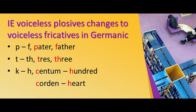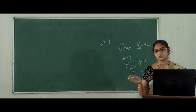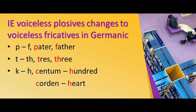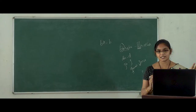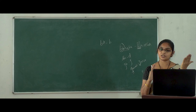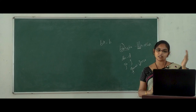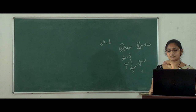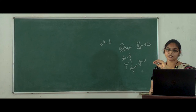Next, 't' is a voiceless plosive. The Latin word 'tres' (t-r-e-s), when it comes to Germanic language, becomes 'three' (th-r-e-e) — so 't' changes into 'th'. Also, 'k' sound changes into 'h': the Latin word 'kentum' means 100, and 'corden' (meaning heart) — the 'c/k' sound changes into 'h', giving us 'hundred' and 'heart'. These are the changes in the plosive sounds from Indo-European to Germanic language.